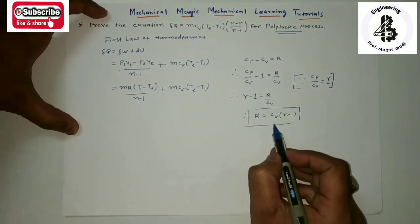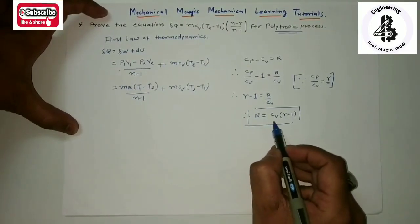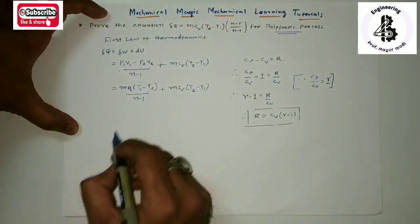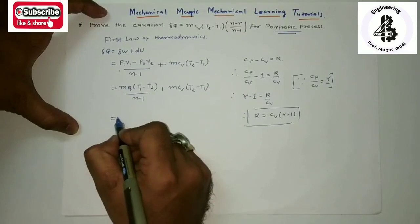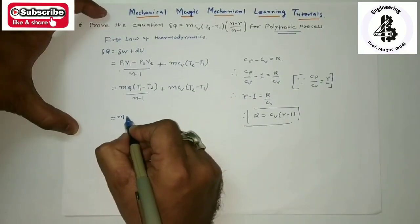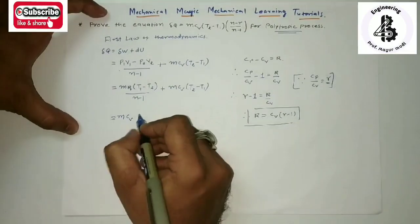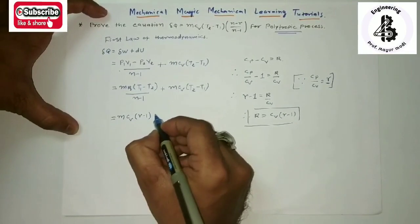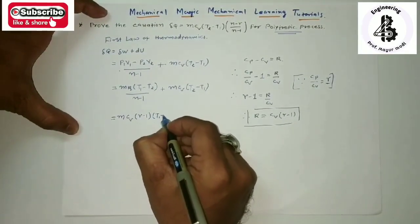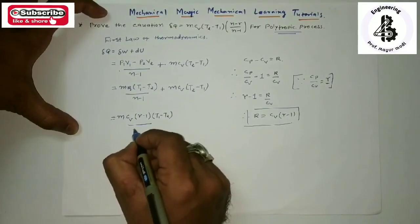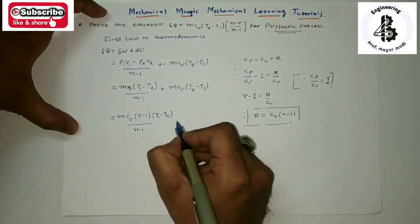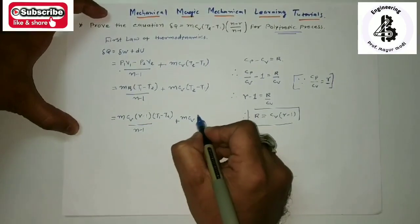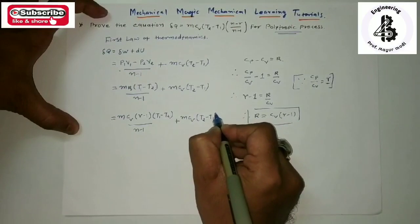I want to use this relation R equals Cv(gamma minus 1) and put the value into the equation. So that becomes M·Cv·(gamma minus 1)·(T1 minus T2) divided by (n minus 1), plus M·Cv·(T2 minus T1).